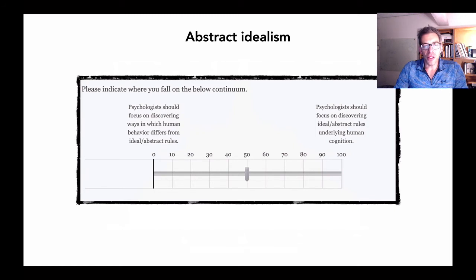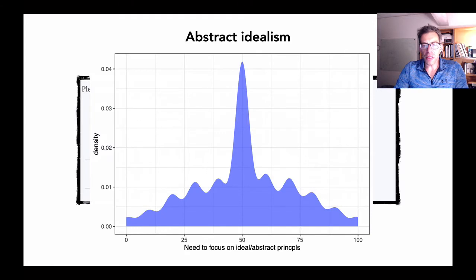Should we focus on discovering ideal or abstract rules? Or should we study deviations from idealizations? Here people are split, but many are not sure how to answer. And so they indicate that they really didn't know and just put that marker in the middle.